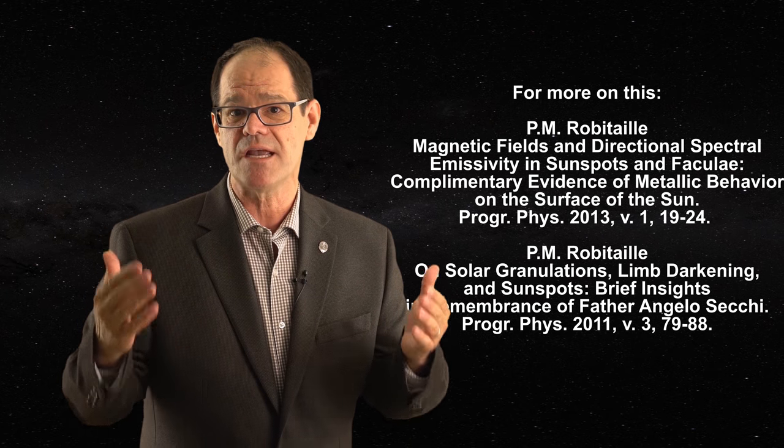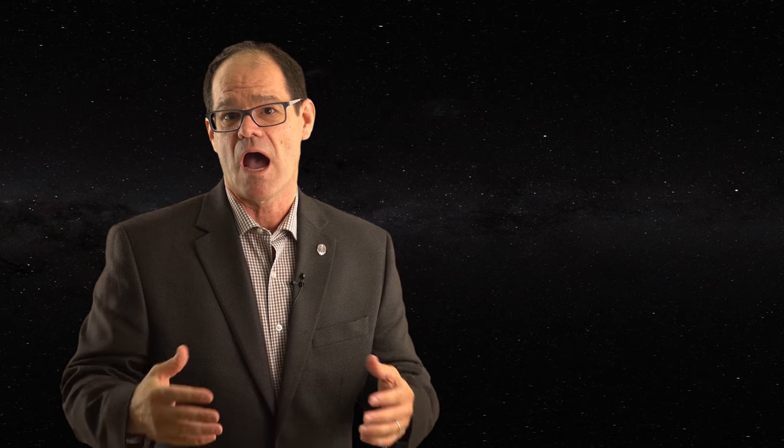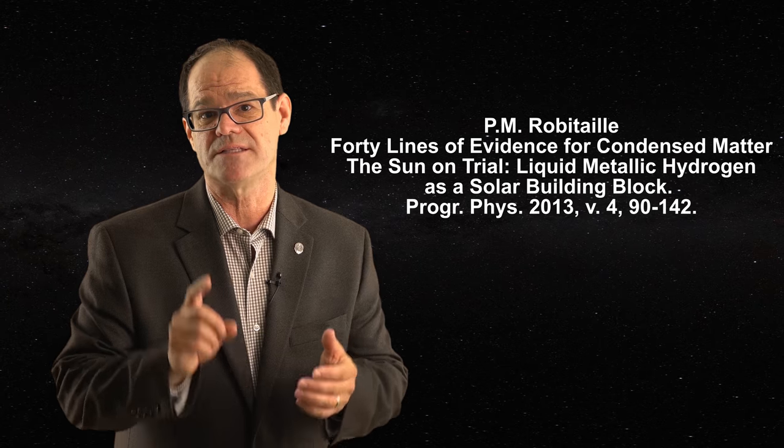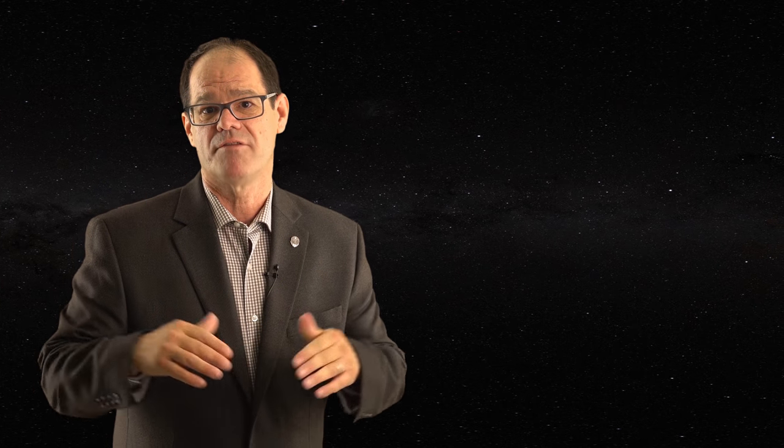Regarding sunspot emissivity at the limb: it has been reported many times in early 20th century literature that the emissivity of sunspots increases at the limb, exactly as our model predicts. However, because the standard solar model cannot account for this, solar astronomers have avoided the problem by claiming contamination from the photosphere. Additionally, the layered planes in sunspots are likely orthogonal to the solar surface — as suggested by powerful solar winds above sunspots and their means of formation — whereas the layered hexagonal planes in faculae should be parallel to the solar surface. This helps account for the differences in emissivities observed between sunspots and faculae, even though both are Type 2 materials.